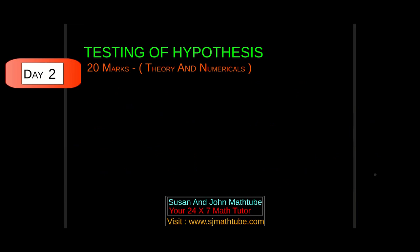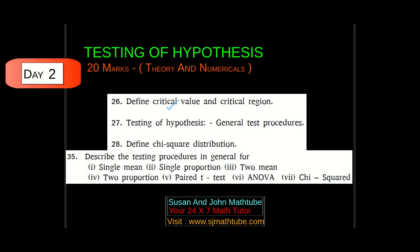The possible theory questions include: critical value, critical region, and chi-square distribution. The general procedure is very important — be ready with it. If they ask this question, be happy, because you don't have to calculate anything. Just write step one through step five, all the procedures clearly. When you explain the calculated values, make sure you give proper formulae for all the tests.